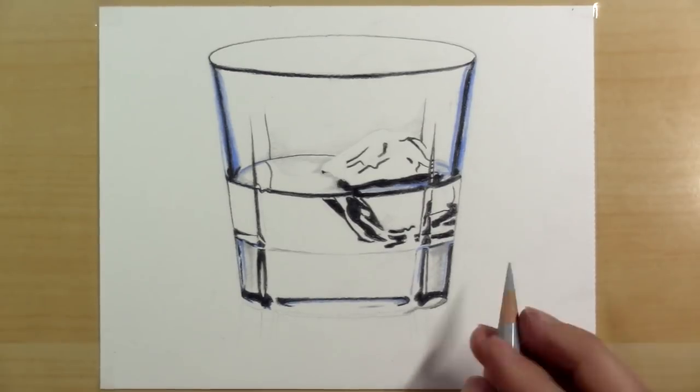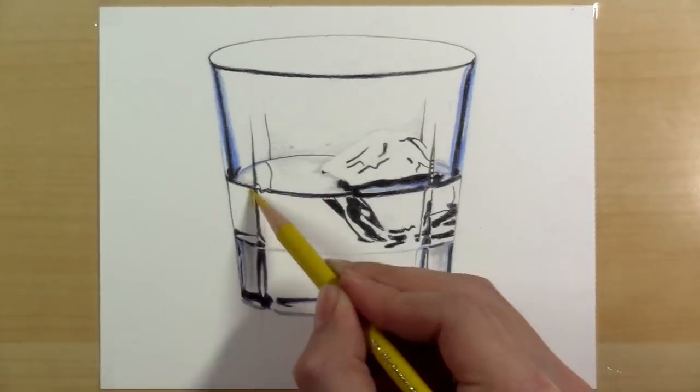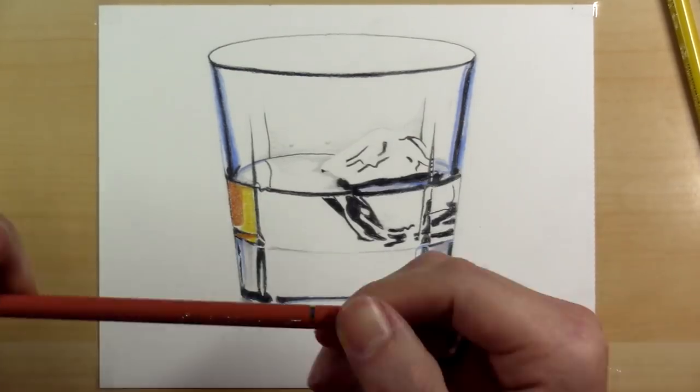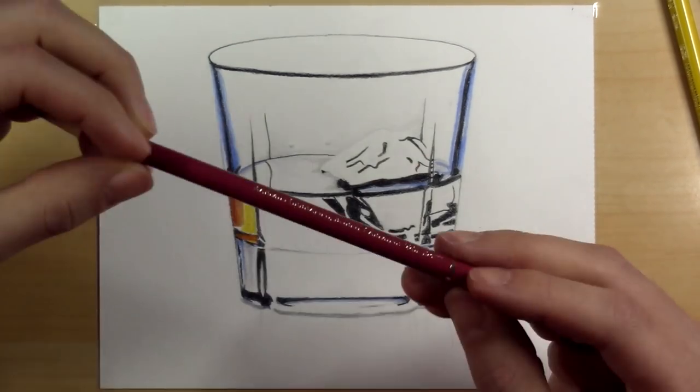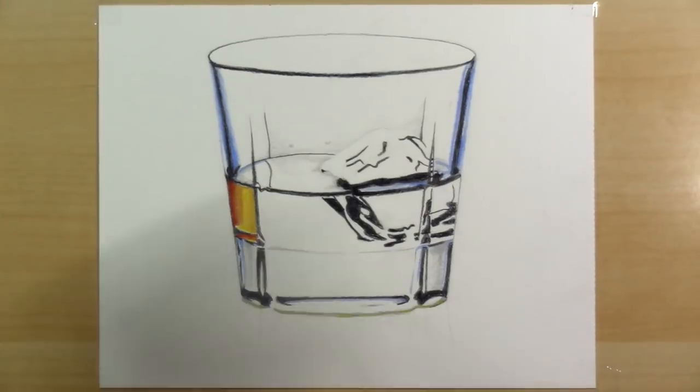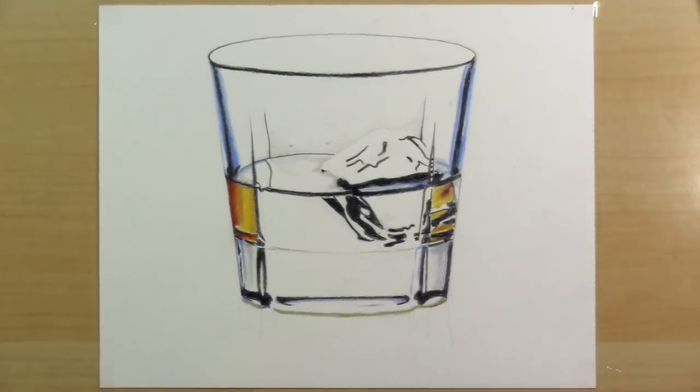The second property in common with translucent or shiny objects is sharpness. On curved, smooth objects, light is bent and stretched, and when it is bent, it creates very clean and sharp lines.